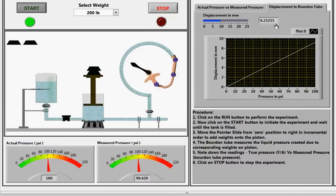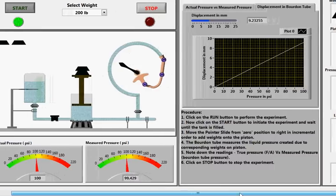In the right hand side you can see the specification of components used in the experimental setup. Procedure is also given below to perform the experiment step by step.